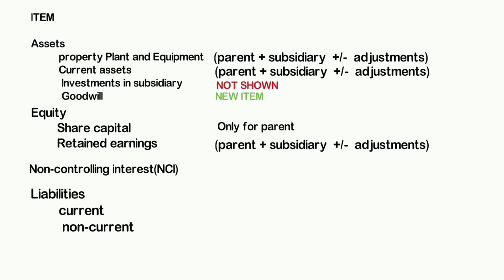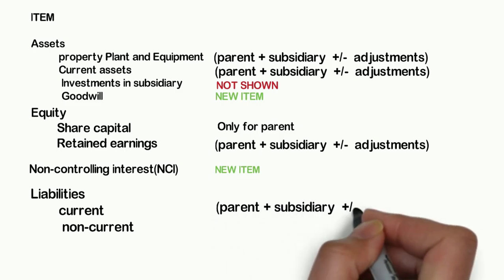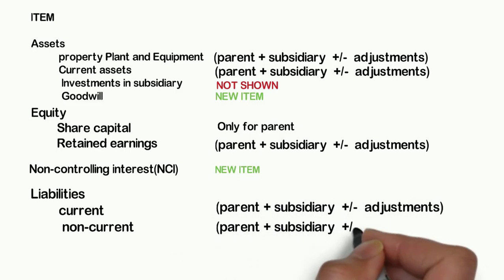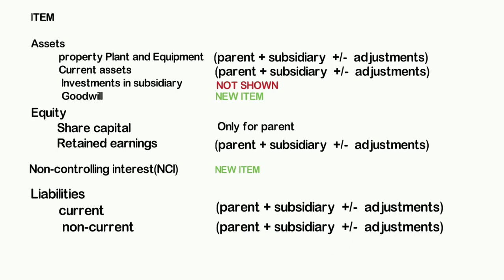Non-controlling interest comes into existence when the parent acquires more than 50% but less than 100% of the subsidiary's shares. The valuation of NCI includes the date-of-acquisition fair value of shares not acquired by the parent, plus the NCI's share of the subsidiary's post-acquisition profits. Finally, the liabilities of both parent and subsidiary are added together and adjustments are made for any intra-group transactions.